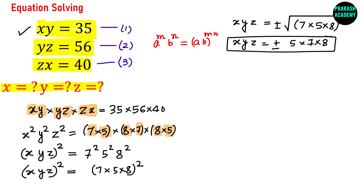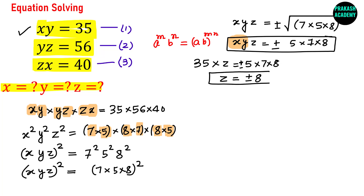Let us use equation 1, which is XY = 35. I can substitute XY = 35 into the product XYZ. So 35 × Z equals plus or minus (5×7×8), which gives Z equals plus or minus 8, since 35 cancels out.